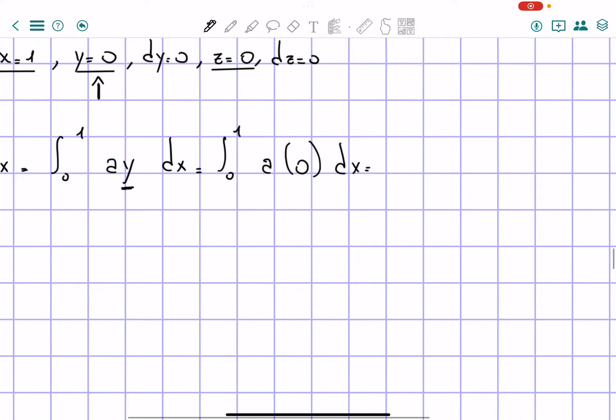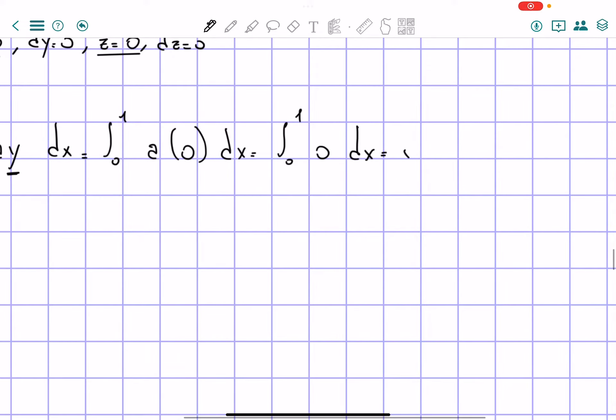So from 0 to 1 of a times 0 dx, which is equal to the integral from 0 to 1 of 0 dx, which is, of course, equals to 0.